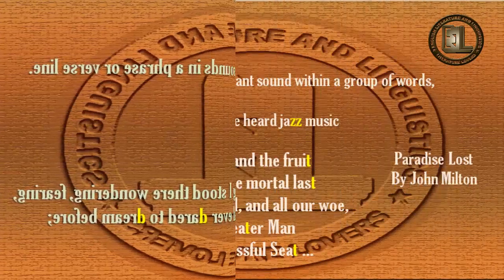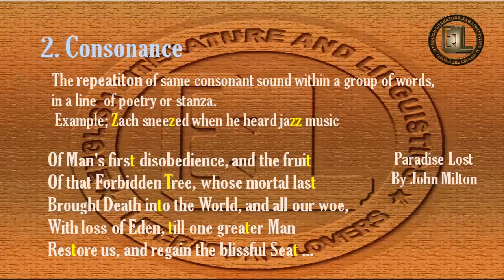Number two is consonance. It is also the repetition of the same consonant sound within a group of words in a line of poetry or stanza. For example: 'Zach sneezed when he heard jazz music' — the sound 'Z' has been repeated. The poetic example is these lines from Paradise Lost by John Milton, where the sound 'T' has been highlighted as it is repeated in every line.